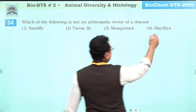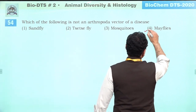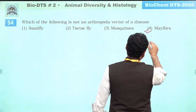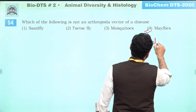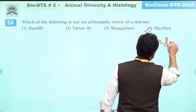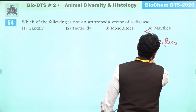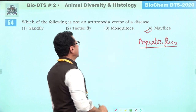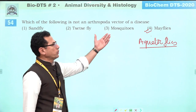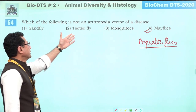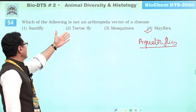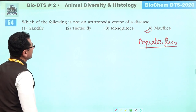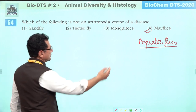Which of the following is not an arthropod vector? Aquatic flies are not vectors of any disease. Mosquitoes, tsetse fly, and sandfly are all vectors. Aquatic flies do not serve as a vector of any disease. Answer is four.